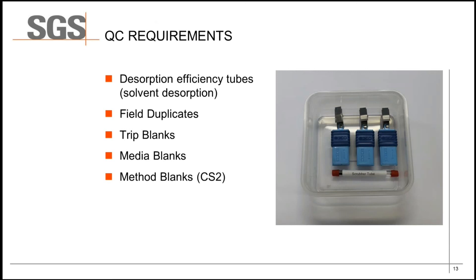With any monitoring program, QC is important and needs to be considered. Passive sampling, and in particular thermal desorption, has additional QC requirements. Taking a field duplicate is straightforward — two samplers can be deployed side by side. For low-level methods such as thermal desorption, QC allows us to demonstrate that we have not caused contamination during transport through the use of trip blanks, and that there is no residual background concentration of VOCs by supplying certificates of cleanliness with the samplers prior to analysis. QC in the lab should also be conducted to demonstrate that lab processing and handling has not contributed any VOCs — for example through the use of method blanks, particularly when performing solvent extractions.